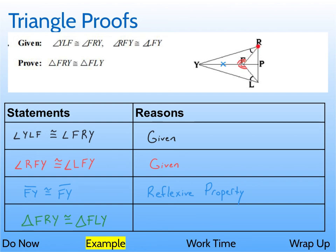And since the side's not in the middle of this, this isn't angle, side, angle. It's angle, angle, side. And same thing on this triangle - angle, angle, side. So there's our reason, and that's our proof.